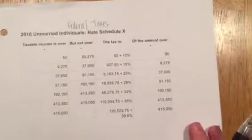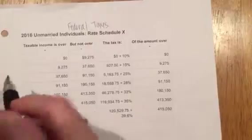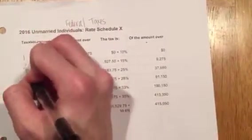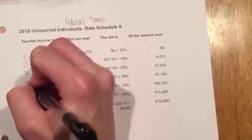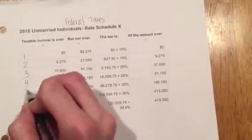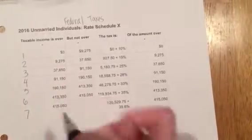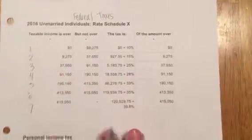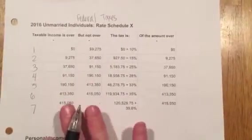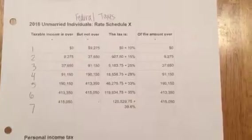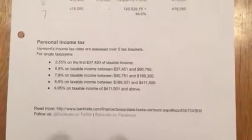We're going to call the rows one, two, three, four, five, six, and seven, because we'll need those row numbers for the next activity you're going to do.